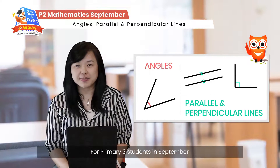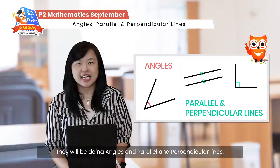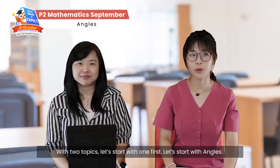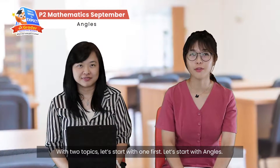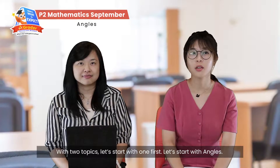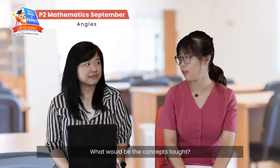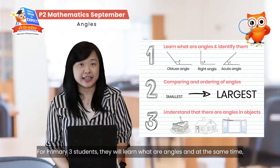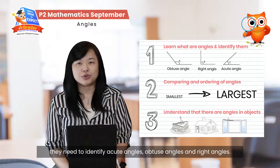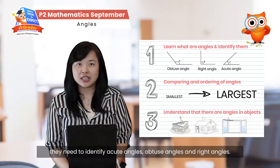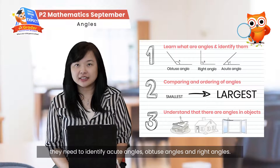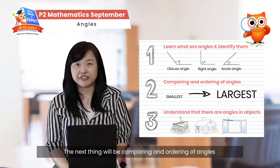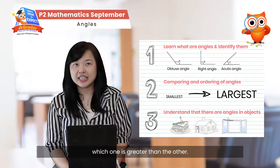For P3 students in September, they will be doing angles and also parallel and perpendicular lines. So let's start with angles. For P3 angles, they will learn what angles are, and at the same time they need to identify acute angles, obtuse angles, and right angles. Then the next thing will be comparing and ordering of angles — which one is greater than which one.